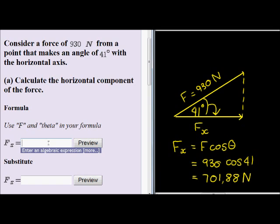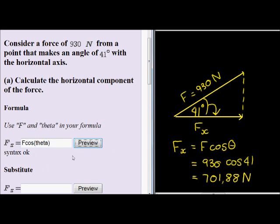To type it in, first we need to type our formula, which is for the horizontal component: F cos, and they tell us to use theta, so in brackets type theta. When you click on preview, it actually changes it for you. It says syntax is OK - F cos theta. That's exactly what I want.